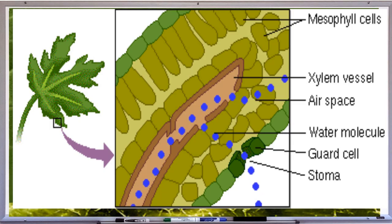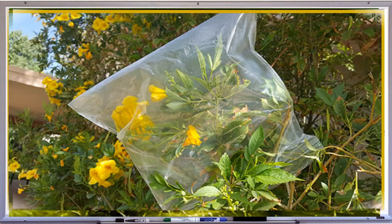You can try this interesting experiment to prove transpiration. Cover a branch of a tree with a transparent cover. Leave it undisturbed for half an hour. You will observe water droplets inside the cover because the water vapor has condensed to form water drops. This proves transpiration.